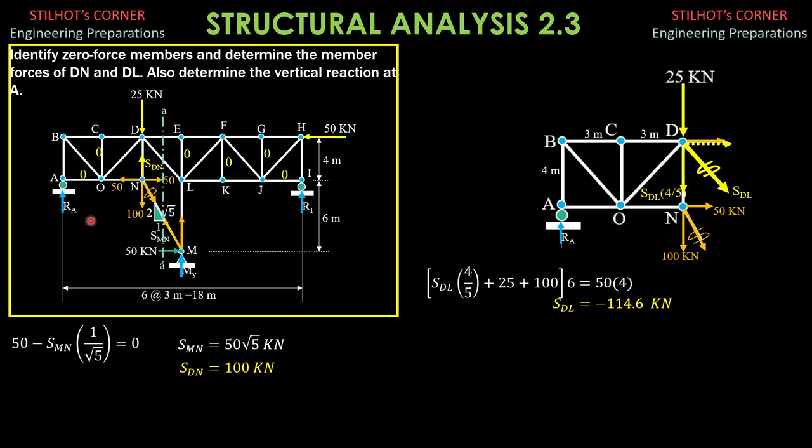Then, finally, to solve for RA, we sum up moments about D equals 0. So that only 50 will have moment about D also. So RA times 6 equals 50 times 4. That's the moment equation about D. RA times 6 equals 50 times 4. So RA is 200 over 6 or 100 over 3. In decimal, 33.33 kN upward.